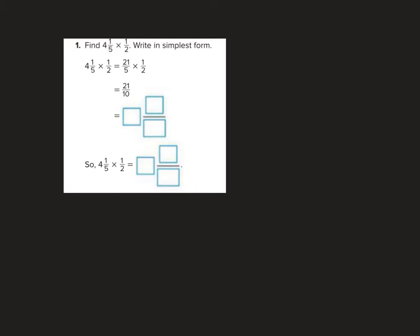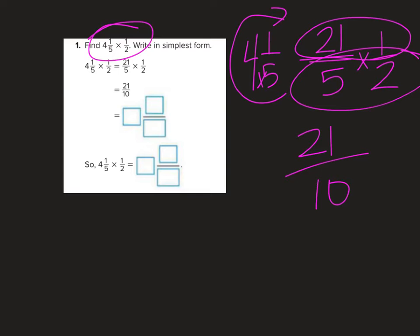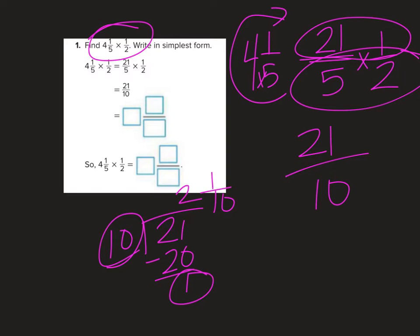We are going to find four and one-fifth times one-half. I'm going to circle up four and one-fifth: five times four is twenty, plus one is twenty-one fifths. So now I'm taking twenty-one fifths and multiplying it by one-half. Twenty-one times one is twenty-one, five times two is ten: twenty-one tenths. Now if I'm going to change that into a mixed number, top divided by the bottom: twenty divided by ten is two, minus twenty I have one left over, so two and one-tenth.